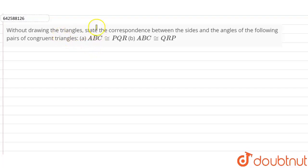Hi students, our question is without drawing the triangle, state the correspondence between the sides and angles of the following pairs of congruent triangles. If ABC is congruent to PQR and ABC is congruent to QRP.